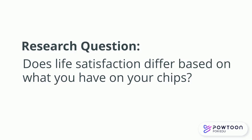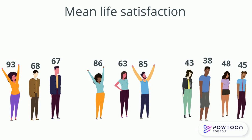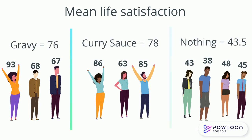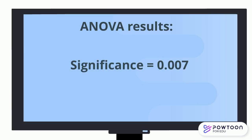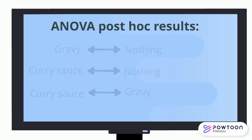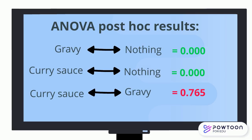To answer the research question, does life satisfaction differ based on what you have on your chips, where our chips variable has three categories, we run an ANOVA. Just like the t-test, the ANOVA compares the mean for your dependent variable for all categories of your independent variable. So here we see the mean life satisfaction score depending on what sauce you like on your chips. We then look at the p-value for the ANOVA — if this is below 0.05, as ours is, it means there are significant differences between your categories. We then run a post-hoc test to examine which differences between the categories there are. Here we can see that life satisfaction was significantly higher for those who liked gravy on their chips compared to nothing, and the same result for those who liked curry sauce compared to nothing, while there was no significant difference between those who like gravy or curry sauce.